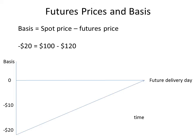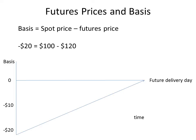Now let's look at how basis might behave over time. On the horizontal axis we have the passage of time, with the futures delivery day marked at the right end. The vertical axis shows the basis, and as we can see, today the basis in this example is negative $20.